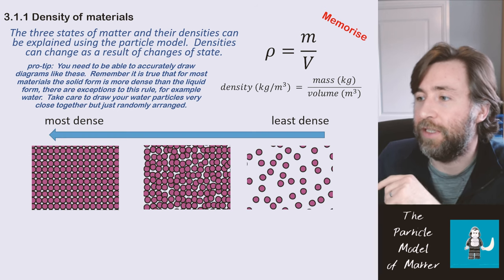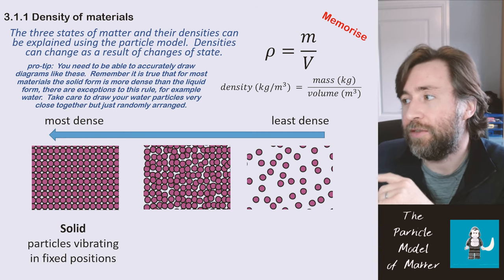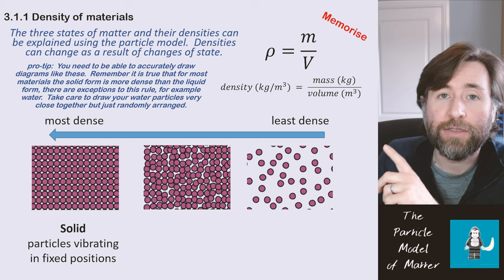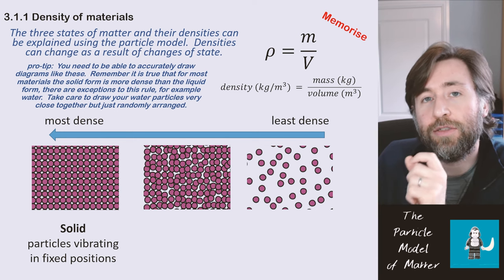So the most dense would be the solid, least dense would be the gas. And remember if you're ever asked to describe the arrangement of the particles in solid, liquid and gases to use these terms.